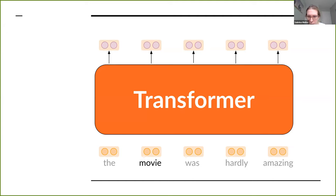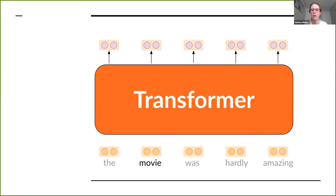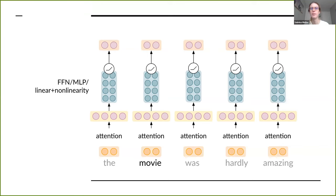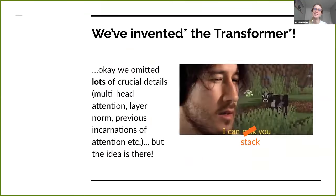The original word embedding for 'movie' is always 'movie,' but what comes out is an embedding for 'movie' in the context of 'the movie was hardly amazing' - so it really tells us something more about the sentence. The presentation will be available afterwards. This is the transformer model, more or less - we've omitted details like multiple heads of attention, layer norm, and the fact that attention existed before the transformer paper and was widely used in machine translation.